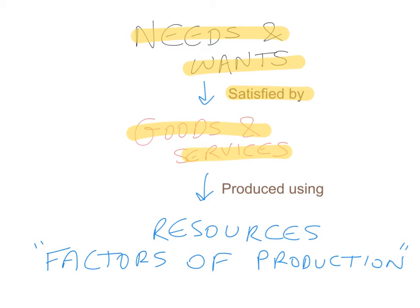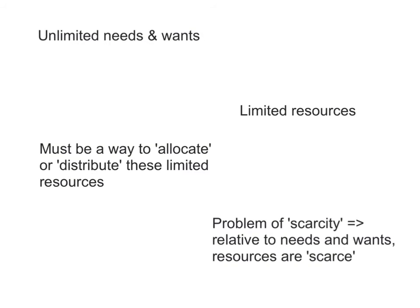These goods and services are produced using resources, or the factors of production. The basic economic problem is that the needs and wants of people are unlimited, while the resources that are available to satisfy those needs and wants are limited. Therefore, there must be a way to allocate or distribute these limited resources. This is what economists refer to as the problem of scarcity.